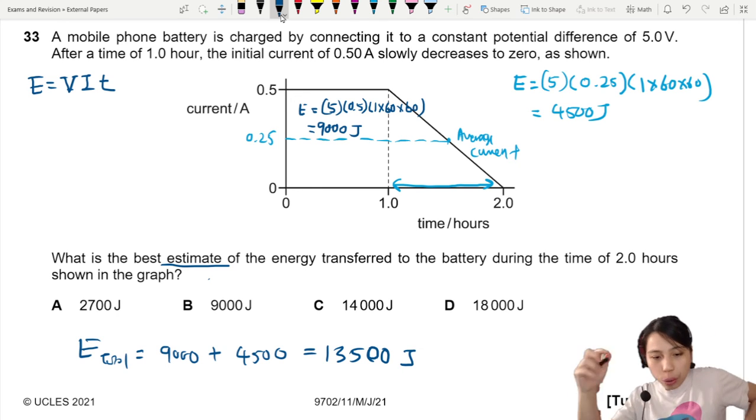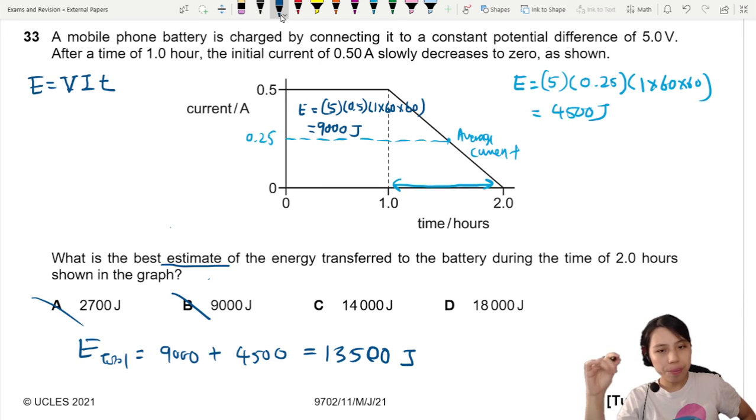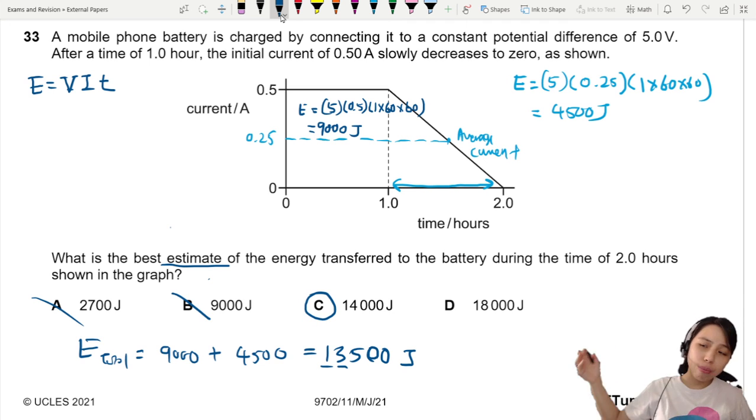So based on the choices, I don't think we can choose 9,000 because that's the whole beginning part. Already 9,000 come out. And cannot be 2,700 because there's too little. So left with C and D, I think it's okay to choose C because if we round off to 2 significant figures, that will be closest to our answer. So we're going to use this method, estimate, and we get our answer.